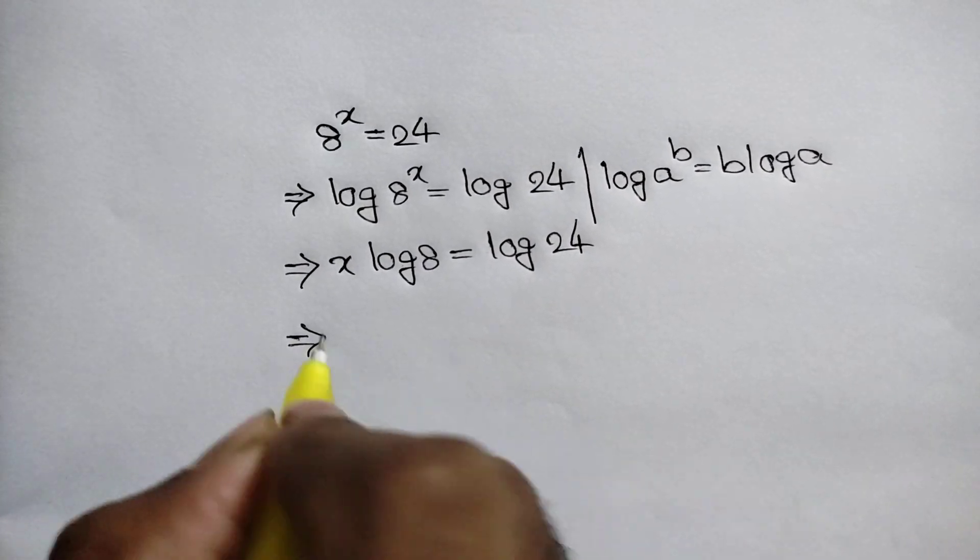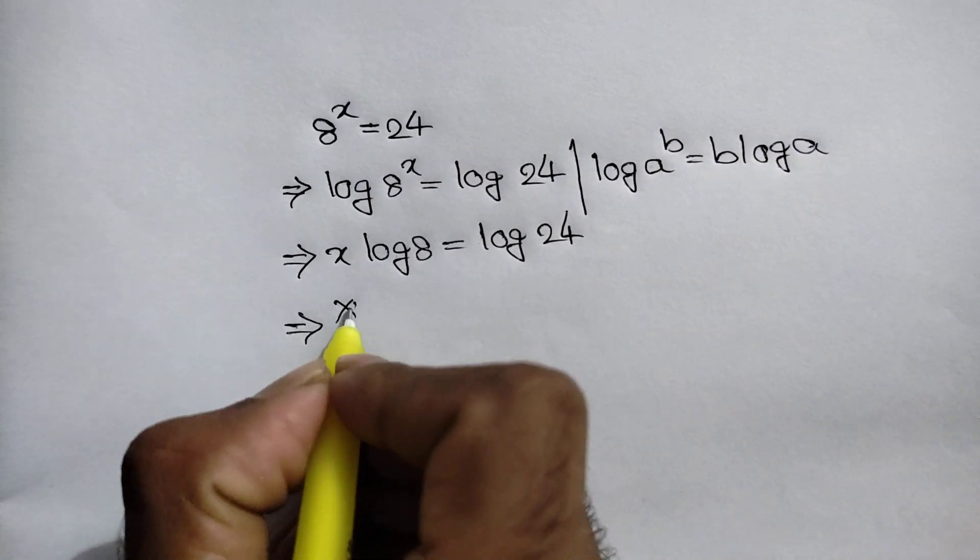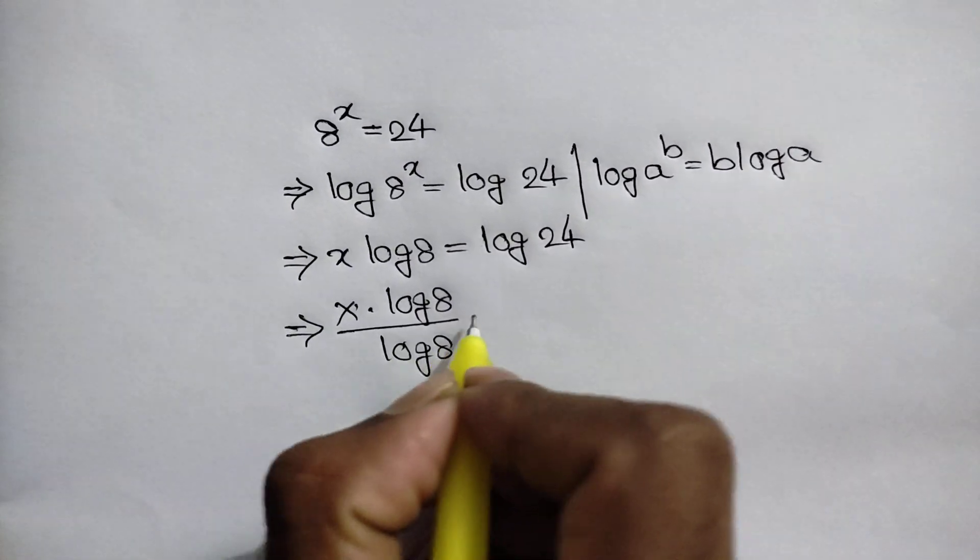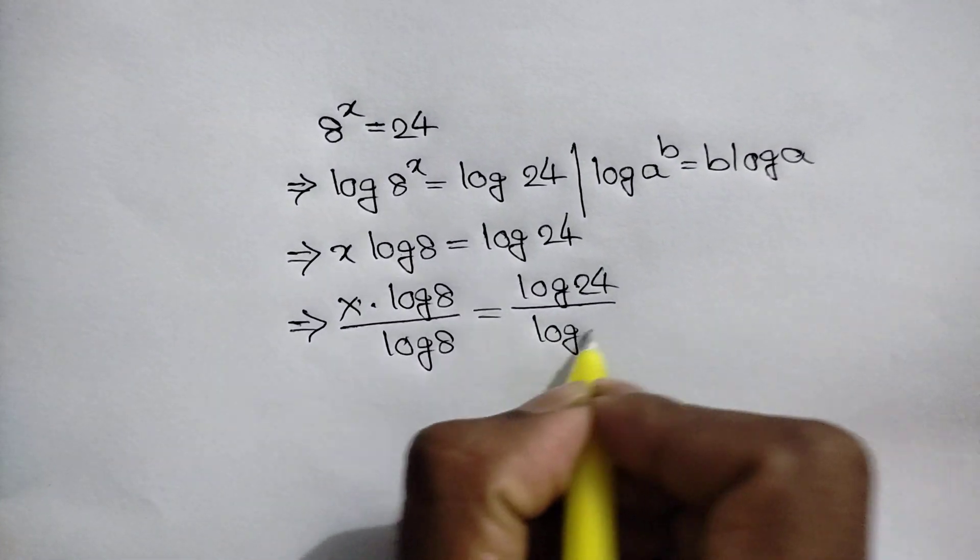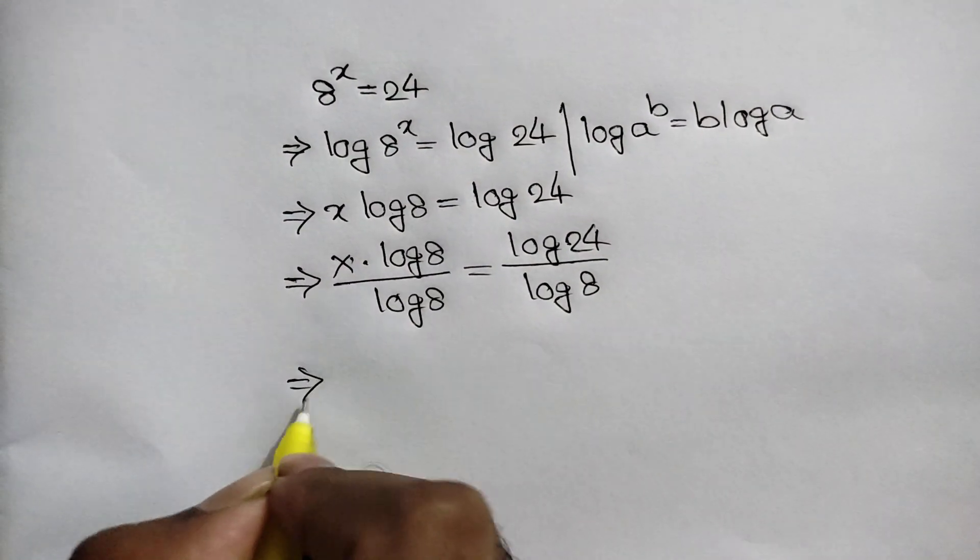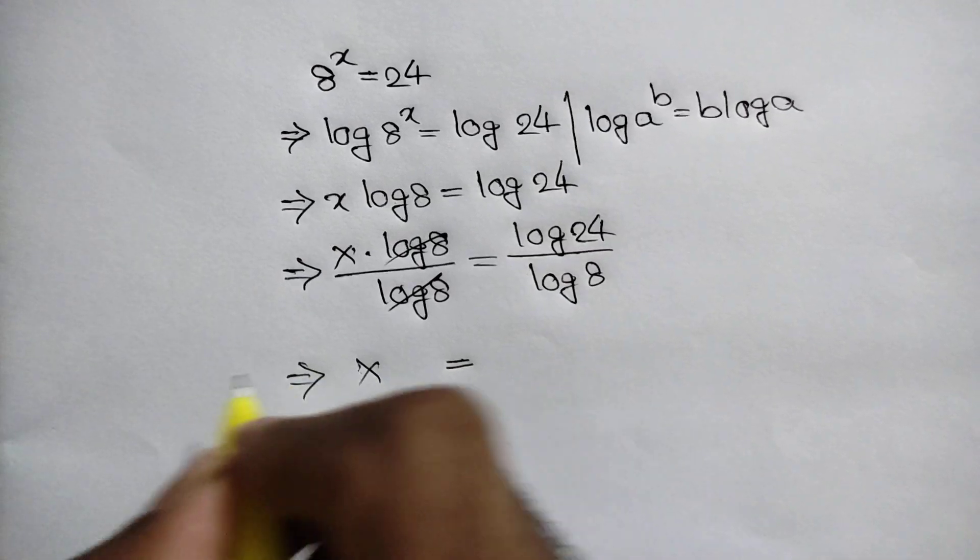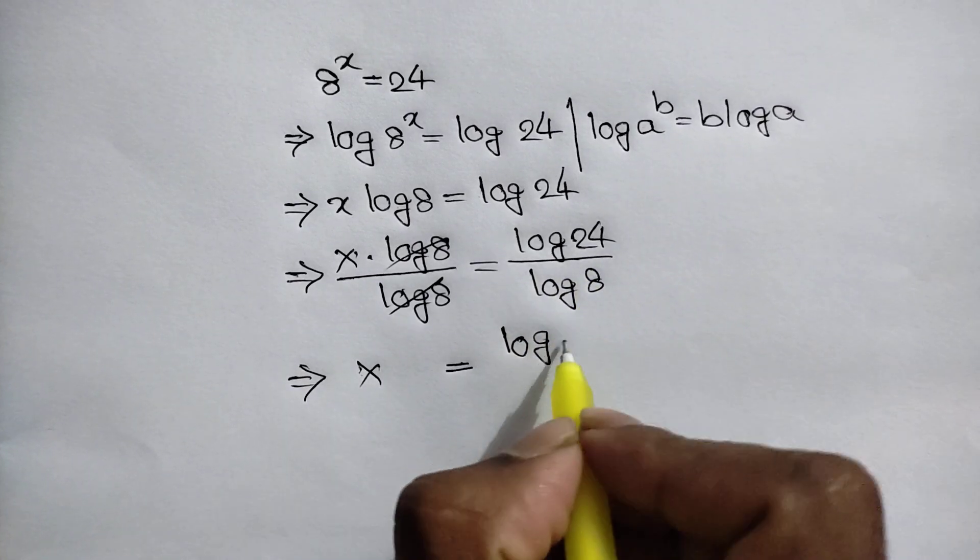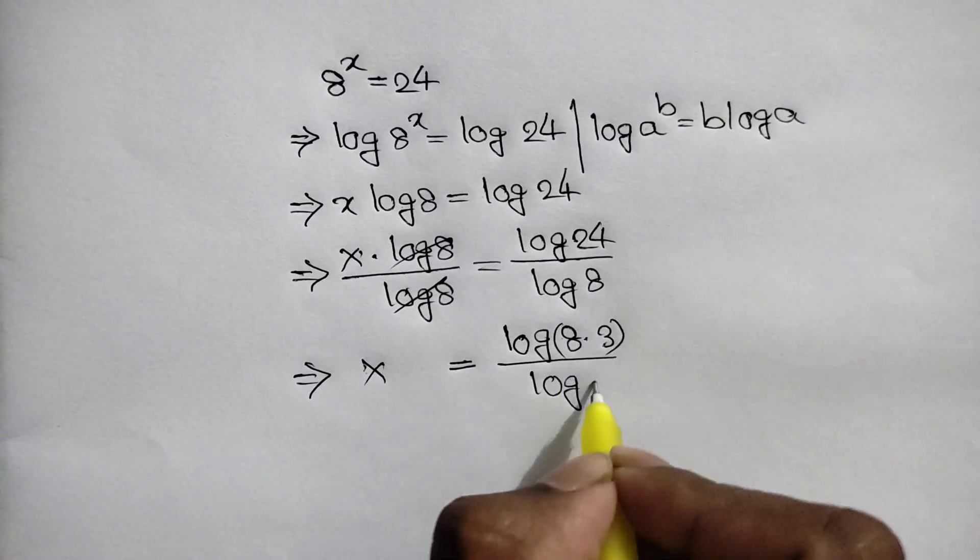Now, dividing both sides by log 8, we can write x times log 8 over log 8 equals log 24 over log 8. This log 8 cancels out this log 8. So x equals log 24 over log 8, where 24 equals 8 times 3.